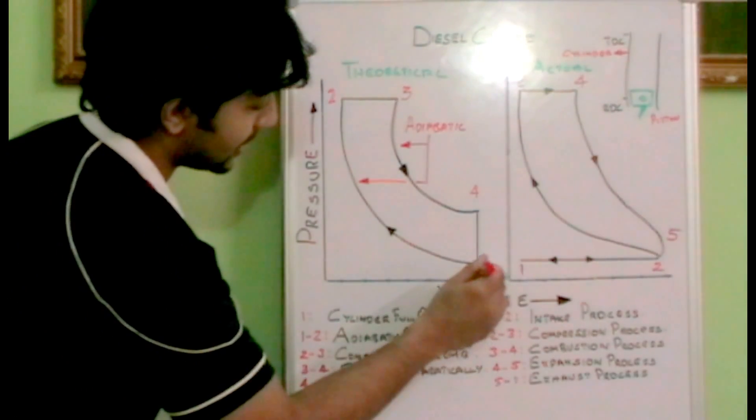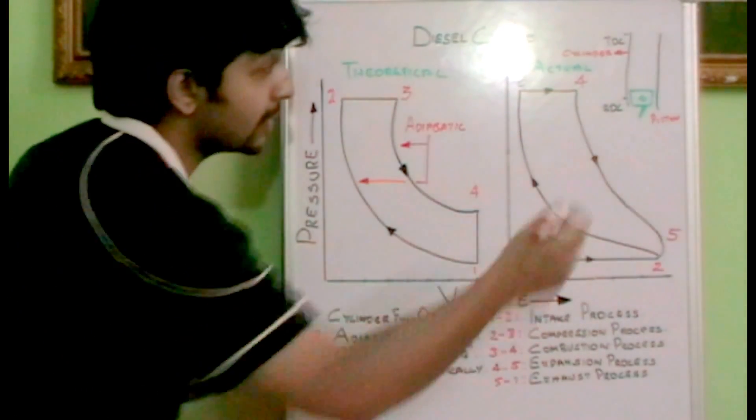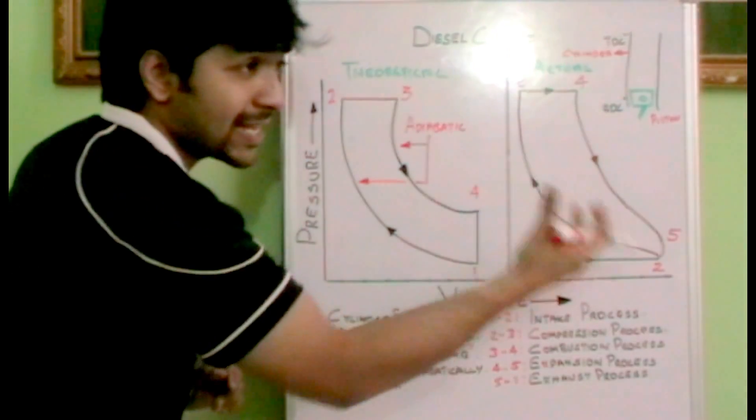Initially in the first stage, the concept is that the cylinder is full of air. This is the cylinder and we have the piston at BDC. The cylinder is full of air.